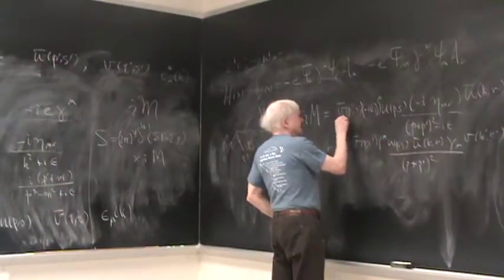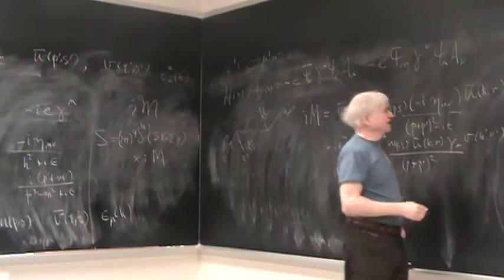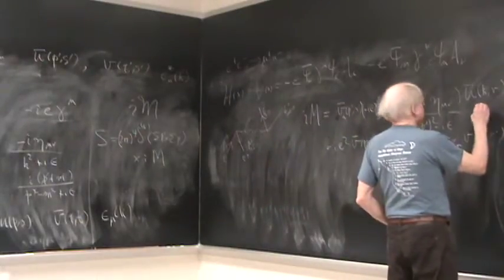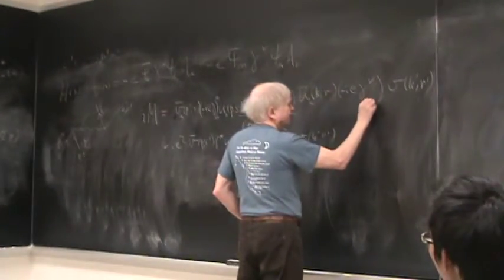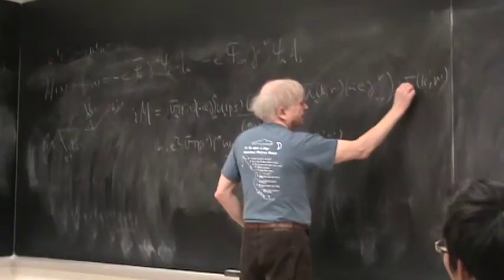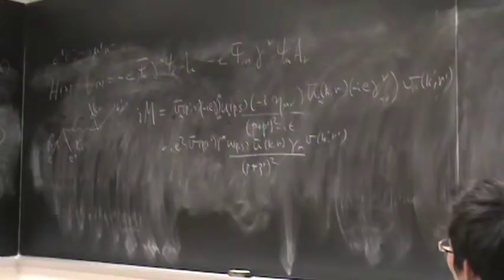So that's our, that's what iM is. And S is 2π to the fourth energy momentum conserving delta function times iM. So is there still an extra α or β label on the v's and u's? Yes. So then those things are just numbers, right, if I fix α or β? Right.